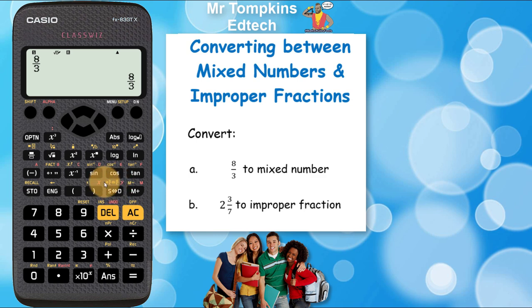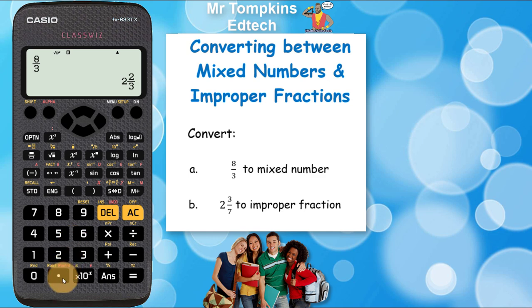You'll see above the symbolic to decimal key it's got A, B, C in a mixed number format and an arrow pointing to the A over C. That's meant to show the conversion between the mixed number and improper fraction, and if I press the key you can see it's going to rewrite it as 2 and 2 thirds.